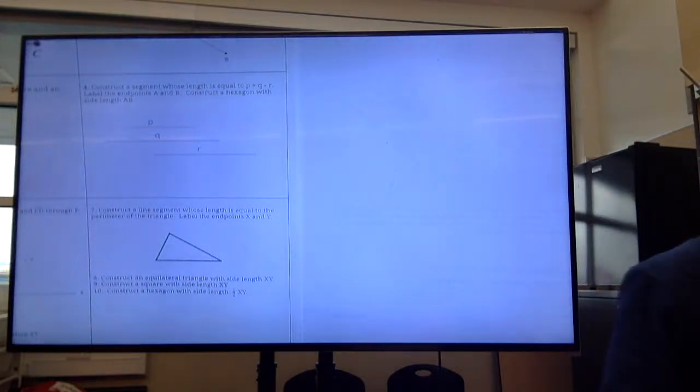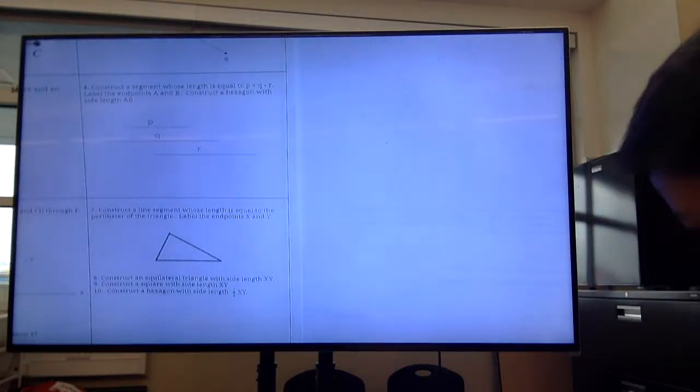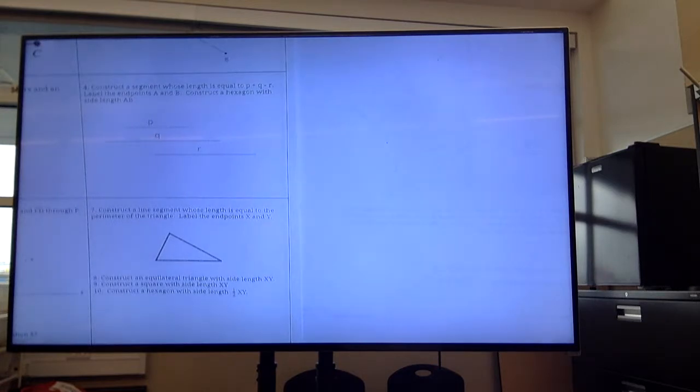This is question number four from L61. In this question we're asked to construct a segment whose length is equal to P plus Q minus R, and label the endpoints A and B.